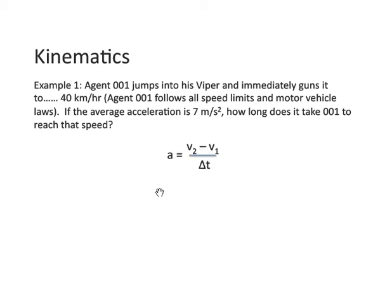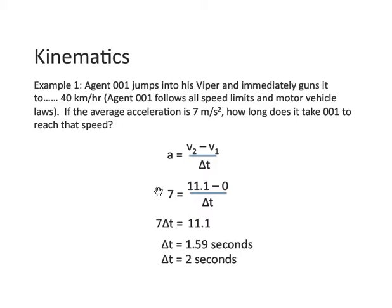Well, let's see how we work through with this formula. We substitute our values. 7 goes for acceleration. The final speed is 11 and the initial speed is 0. We cross-multiply our delta t. 7 delta t equals 11.1 and then we divide. If we consider significant digits, the answer is 2 seconds with significant digits.